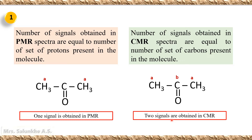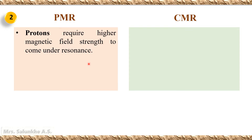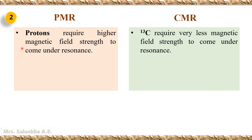In case of PMR spectroscopy, protons require a higher magnetic field strength to come under resonance. While in case of CMR spectroscopy, 13C requires a very low magnetic field strength to come under resonance.